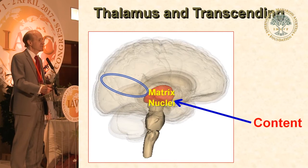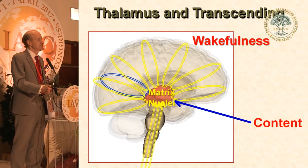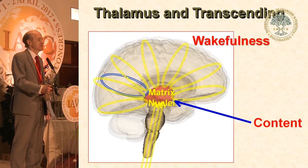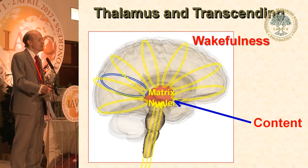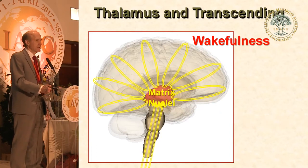But to see things, there's another group of nuclei called matrix nuclei, spread throughout the thalamus. Input to these are the ascending circuits of the central nervous system. These nuclei also create loops with the cortex, but the core of these loops is not content — it's wakefulness, it's alertness, it's subjectivity. And what transcending does is we learn how to decrease content while wakefulness is maintained.